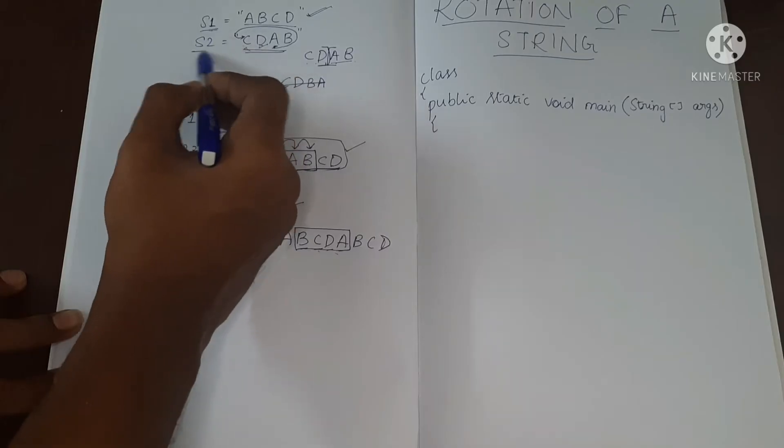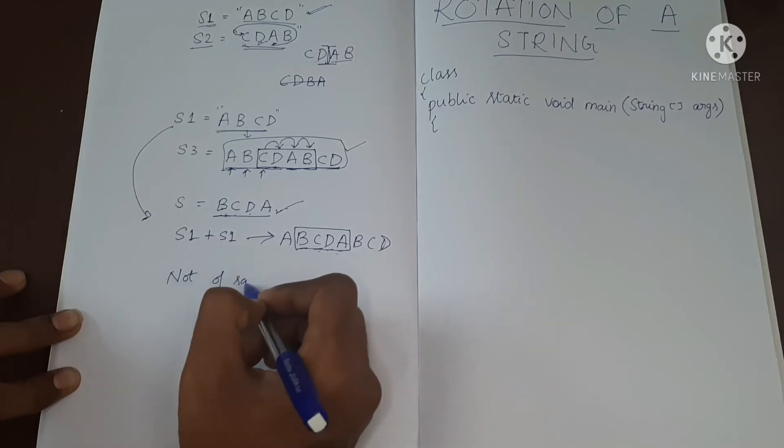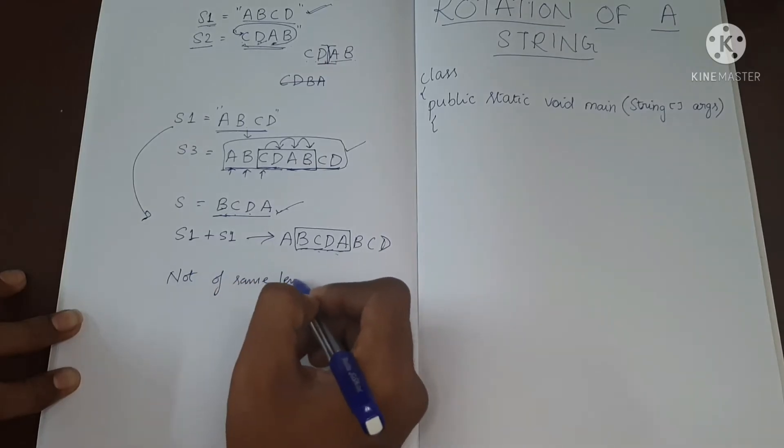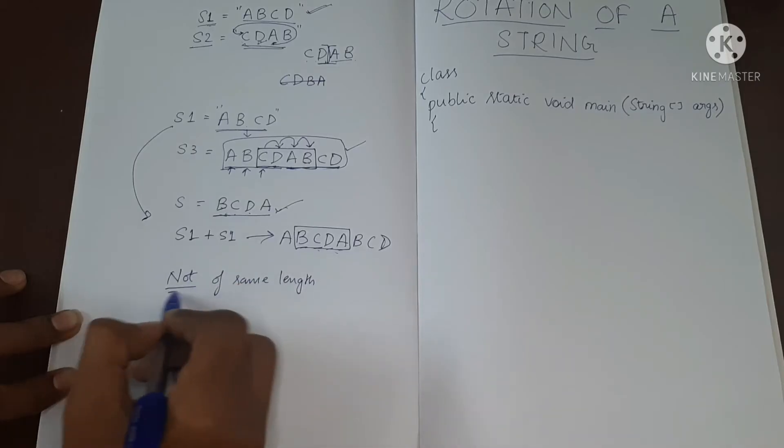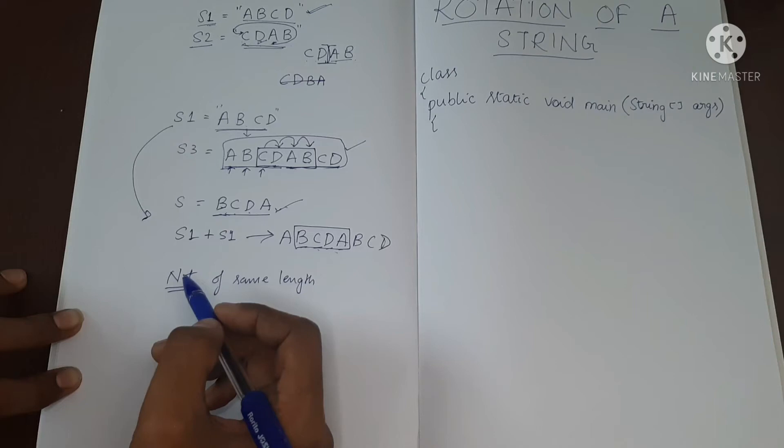That is, if S1 and S2 are not of same length, if they are not of same length, they can never be a rotation of each other.